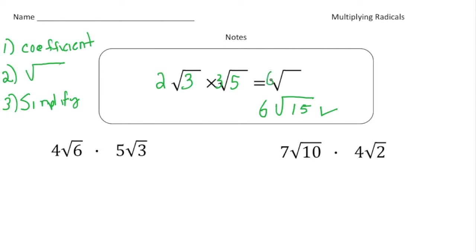So that's all there is. All right, so what I'm going to do is I'm going to put a little 6 and 15 right here. All right, so again, first step multiply the coefficients, second step multiply what's inside the radical signs, and then finally simplify. All right, so let's do two more together.